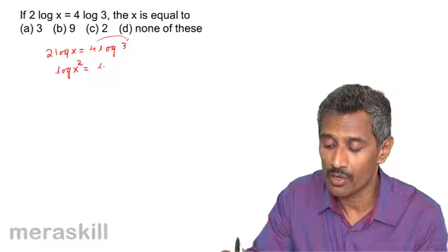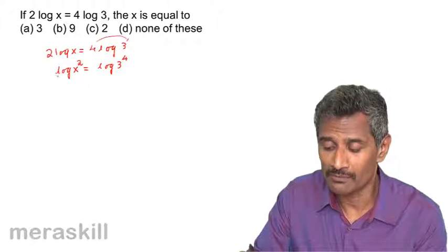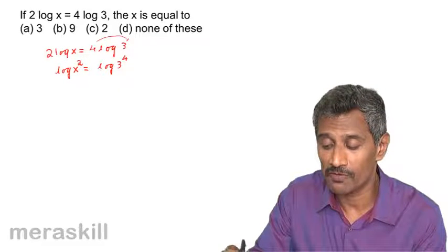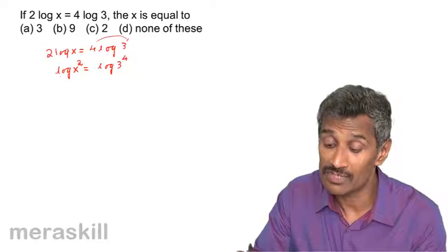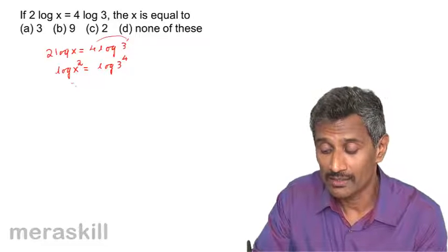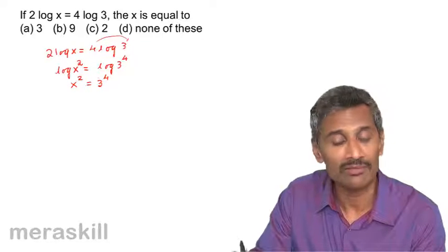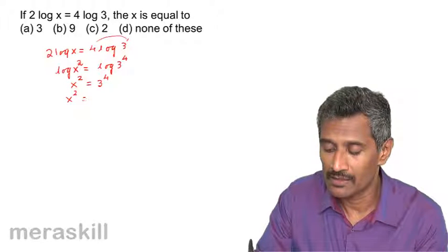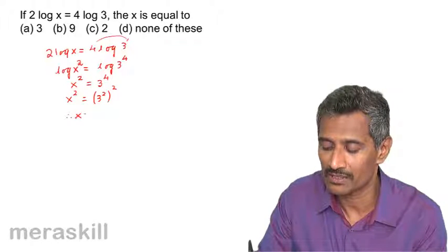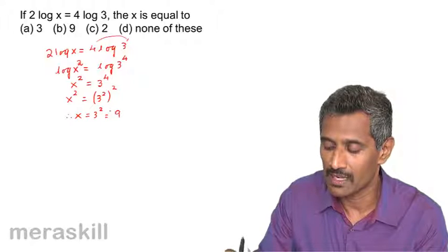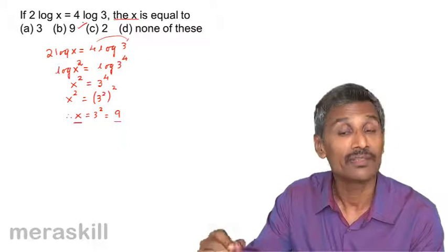So 2 log x becomes log x², and 4 log 3 becomes log 3⁴. Since log of one number equals log of another, the numbers must be equal: x² = 3⁴ = 81. We can write this as x² = (3²)², so x = 3² = 9.